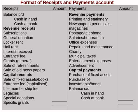On the payment side, the items include: printing and stationery, newspapers, periodicals, magazines, postage and telegram, salaries and honorarium, office expenses, repairs and maintenance, charity, municipal taxes, entertainment expenses, advertisement, and capital payments such as purchase of fixed assets and purchase of investments and bonds.